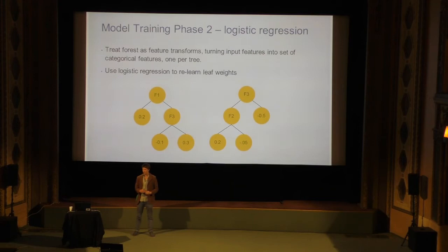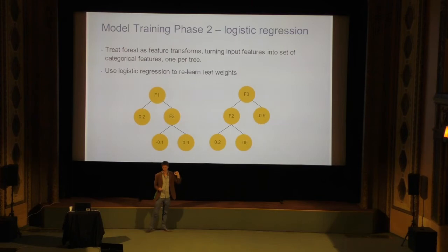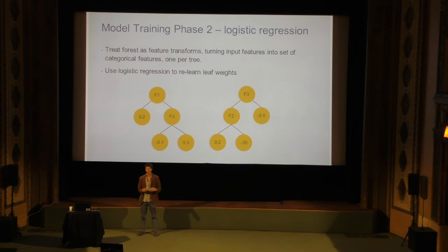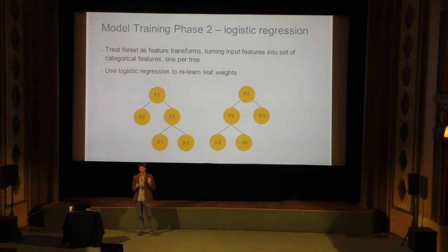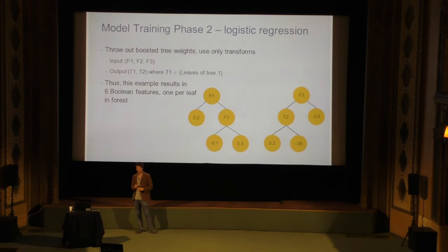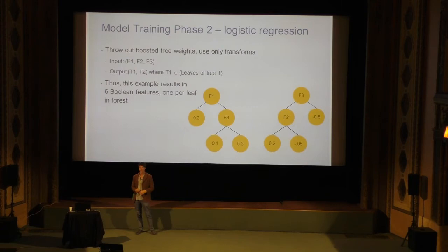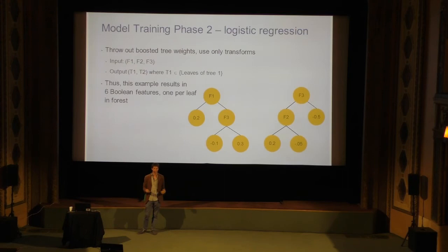We wanted to update models in real time and leverage large-scale distributed logistic regression while still having the nonlinear transformation power of Boosted Decision Trees. So we combined them: train Boosted Decision Trees, but instead of using their leaf weights, we treat the trees as feature transforms. Each tree maps the input features to a single Boolean — one leaf turns on. Then we run logistic regression to relearn all those leaf weights. Now we can update in real time, train on much more data, and update without retraining the trees from scratch, while retaining the power of Boosted Decision Trees.